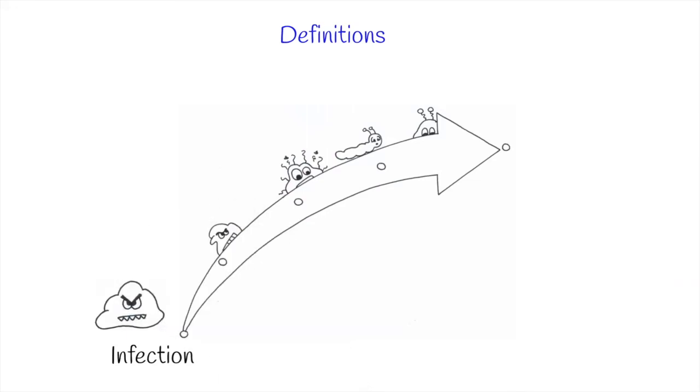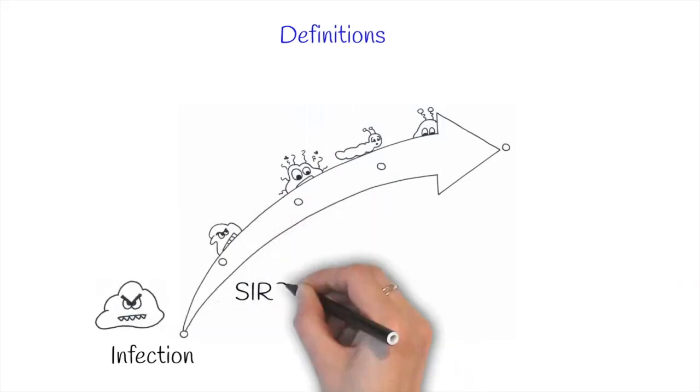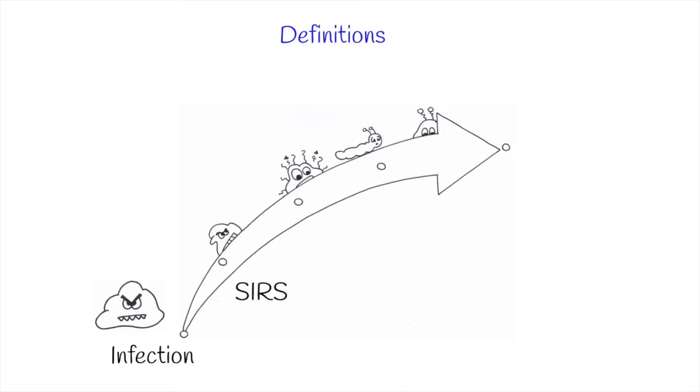Sometimes when there is an infection an animal can develop systemic inflammatory response syndrome that in horses is quite frequent in case of endotoxemia. If you missed the video on endotoxemia, here you can find it.